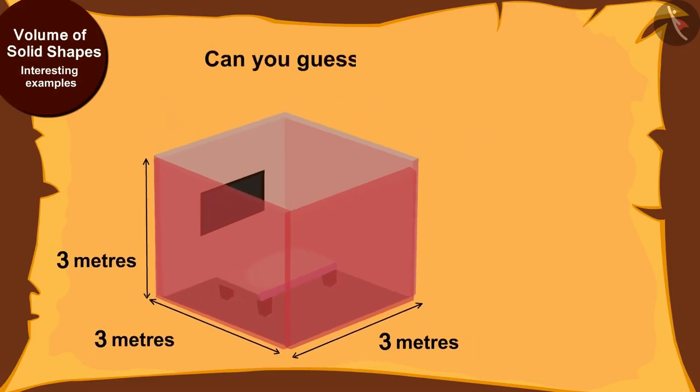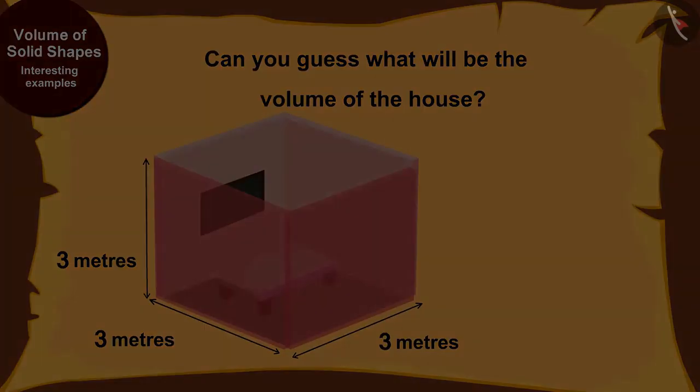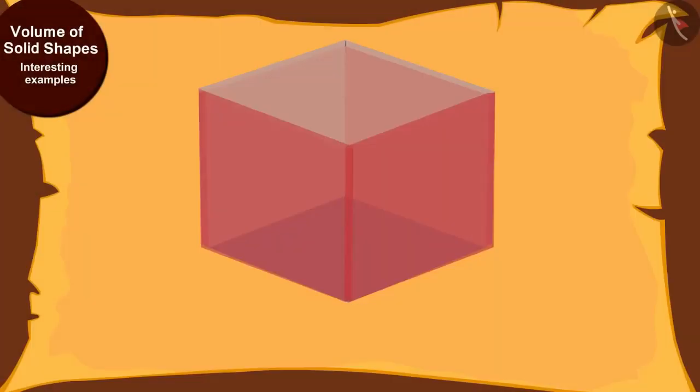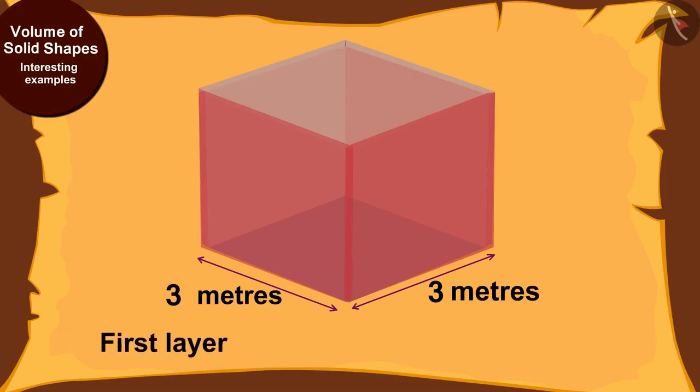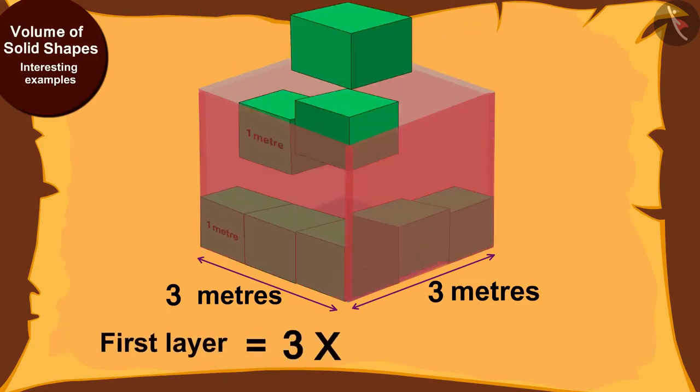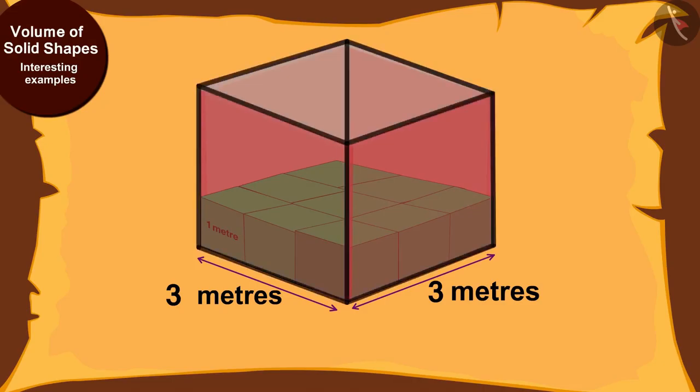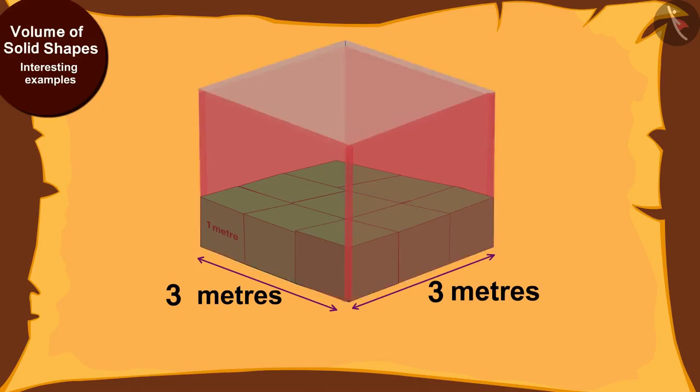So kids, can you guess what will be the volume of the house? If you wish, you can stop the video and think of the answer. The cube-shaped house has a length of three meters. This means that the first layer of the house will have three times three, nine meter cubes.